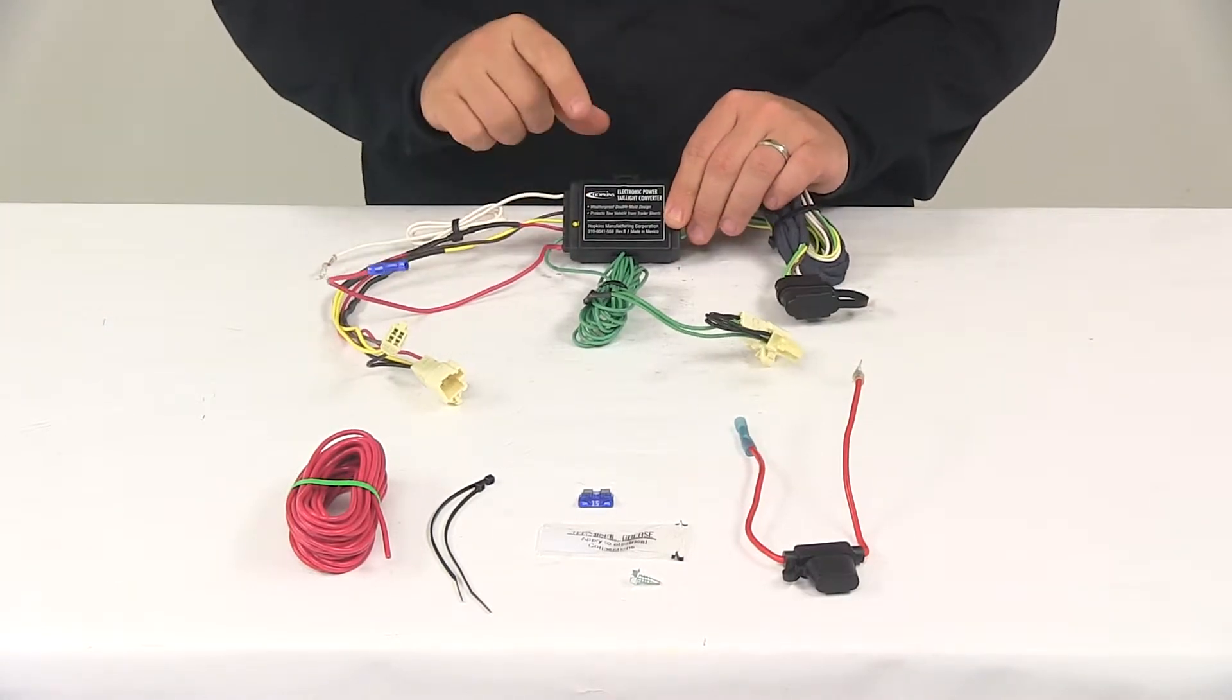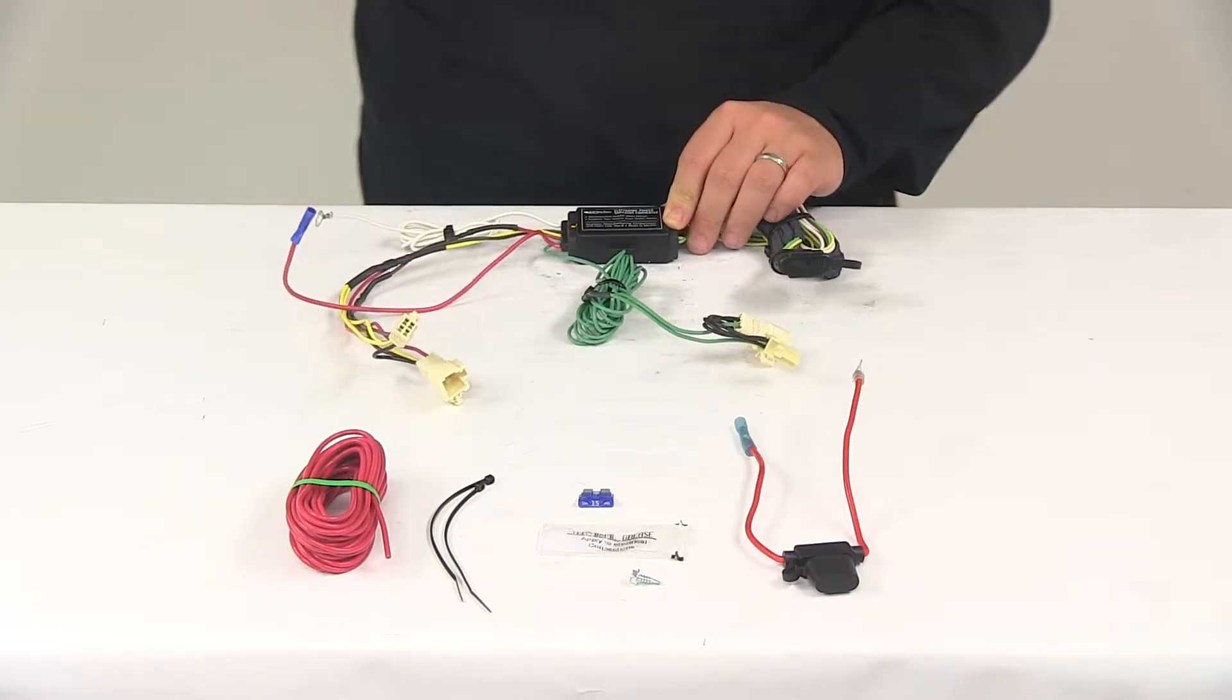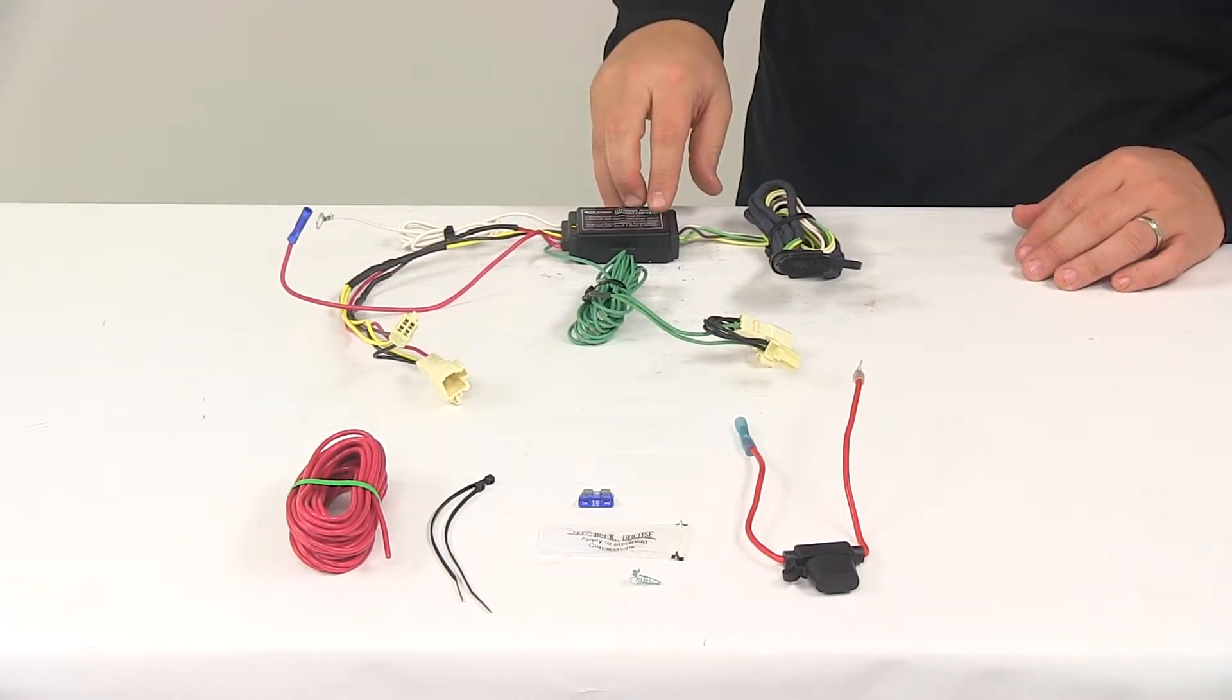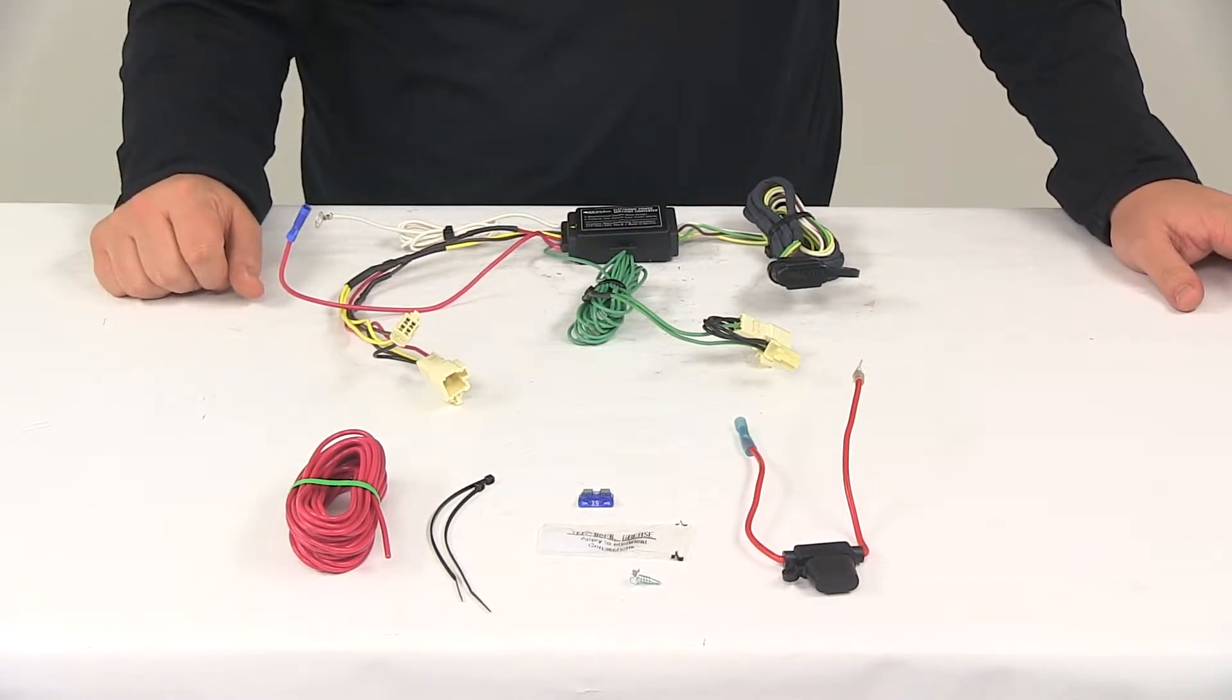The unit also includes a tail light converter. This is going to ensure that your vehicle's wiring matches that of your trailers. The powered module connects directly to the vehicle battery through the wiring to avoid overloading the vehicle's electrical system.